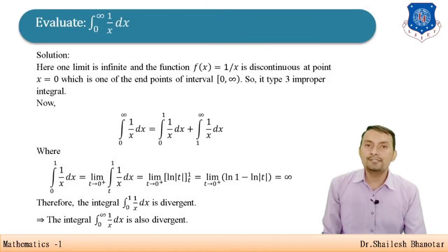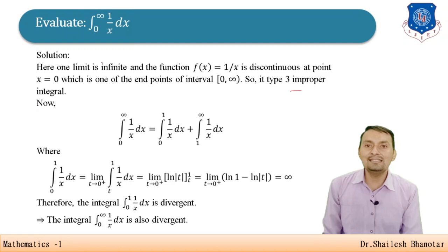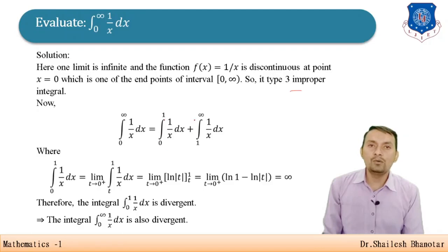Let us evaluate the integration from 0 to infinity of 1/x dx. The upper limit is infinite and the lower limit makes the function unbounded, so it is type 3. To solve this, we consider any constant between 0 and infinity — here we split it as the integration from 0 to 1 and from 1 to infinity.